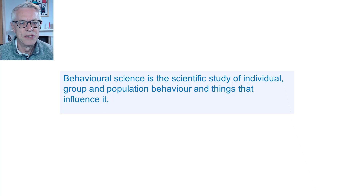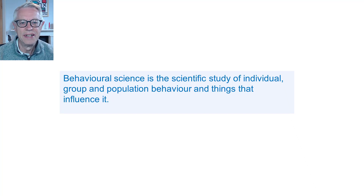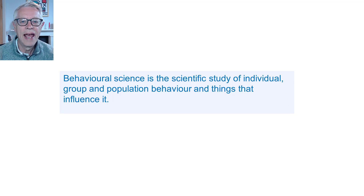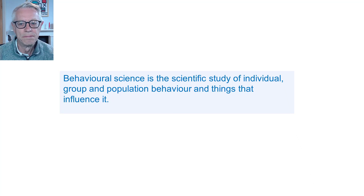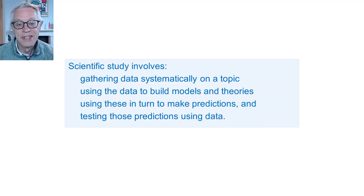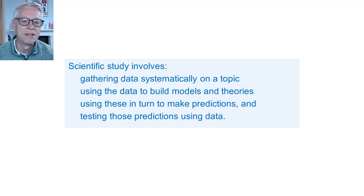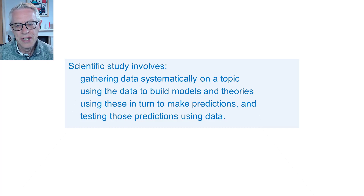At its most general, if you look at encyclopaedia definitions of behavioural science, you'll see that it is the scientific study of individual, group, and population behaviour and the things that influence it. So it's basically anything to do with the scientific study of behaviour and its causes. Scientific study involves gathering data systematically on a topic, using that data to build models and theories, and using these in turn to make predictions and testing those predictions using data. That's basically what science is.